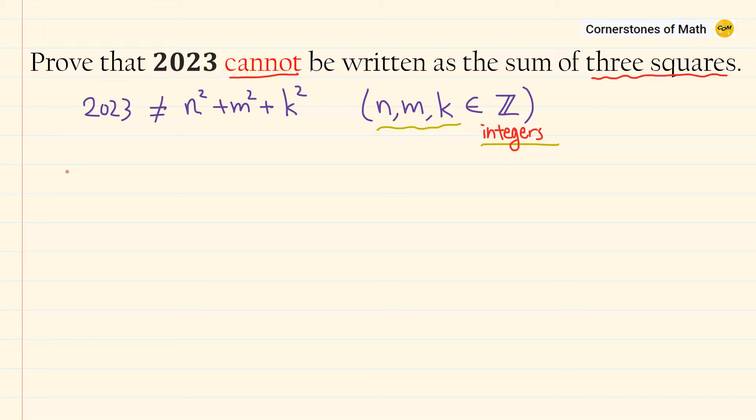There can be many different proofs to this problem, but here I will show you what can be considered as the most natural thought process. The first thing we can ask ourselves is this: Are these n, m, and k even or odd?